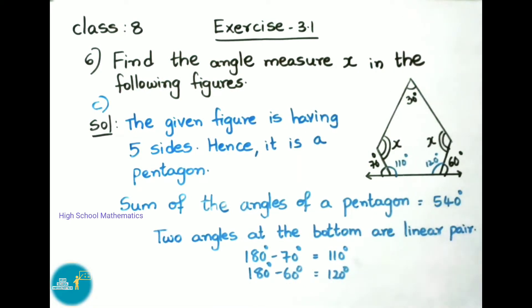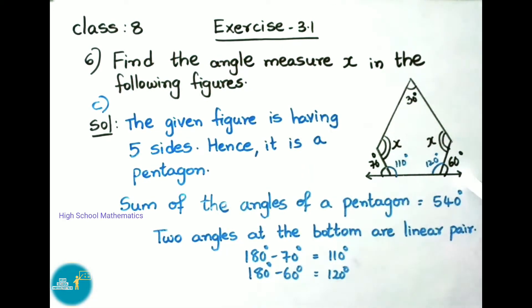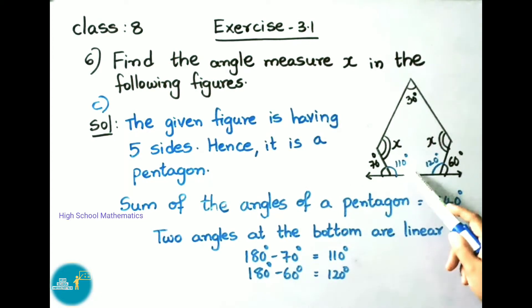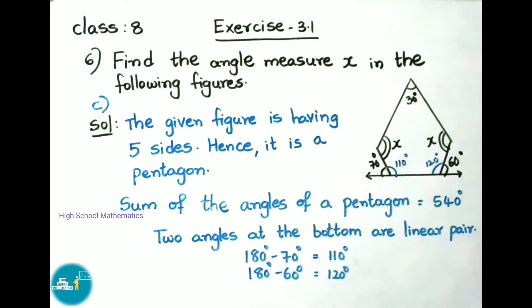See now sixth question C. The given figure has five sides, hence it is a pentagon. The sum of the angles of a pentagon is 540 degrees. The two bottom angles form linear pairs; the sum of a linear pair is 180 degrees. So 180 - 70 = 110 degrees for one angle, and 180 - 60 = 120 degrees for the other.